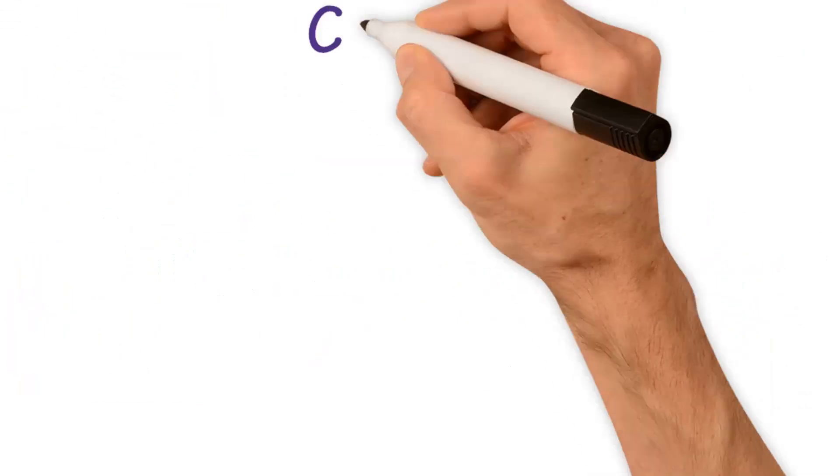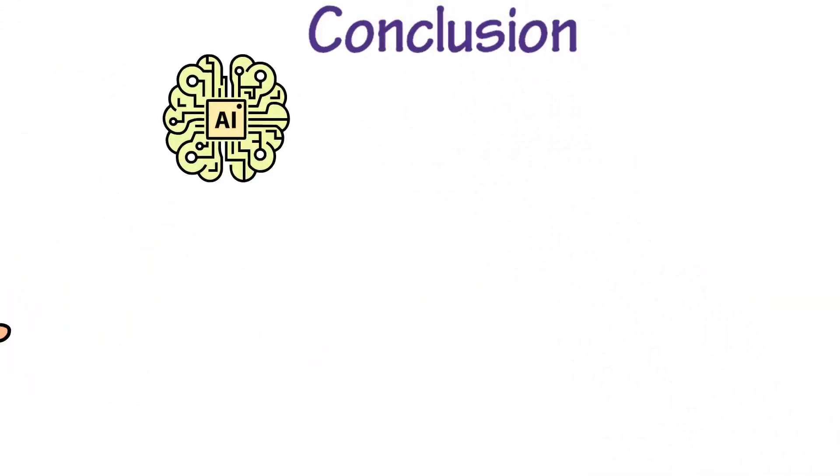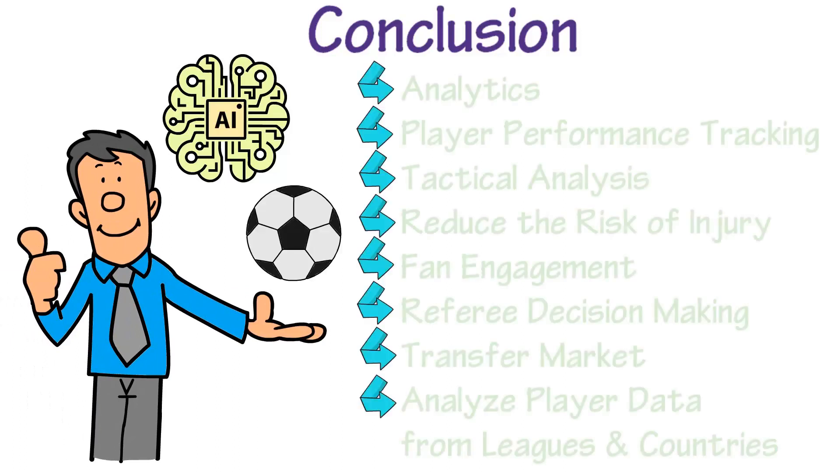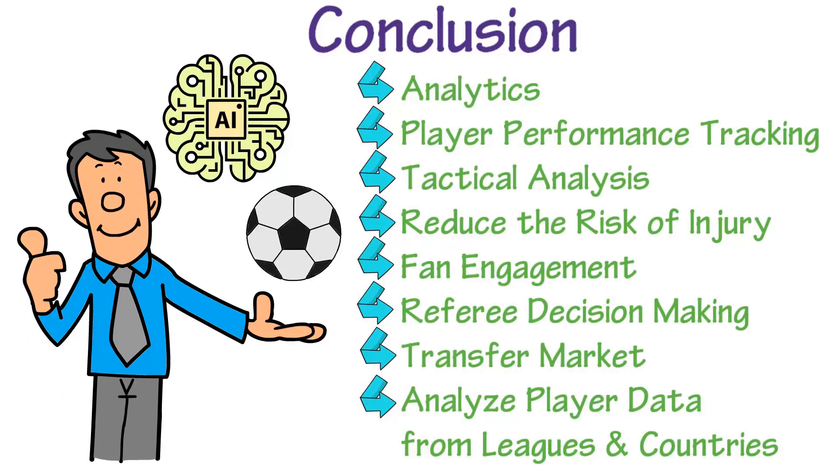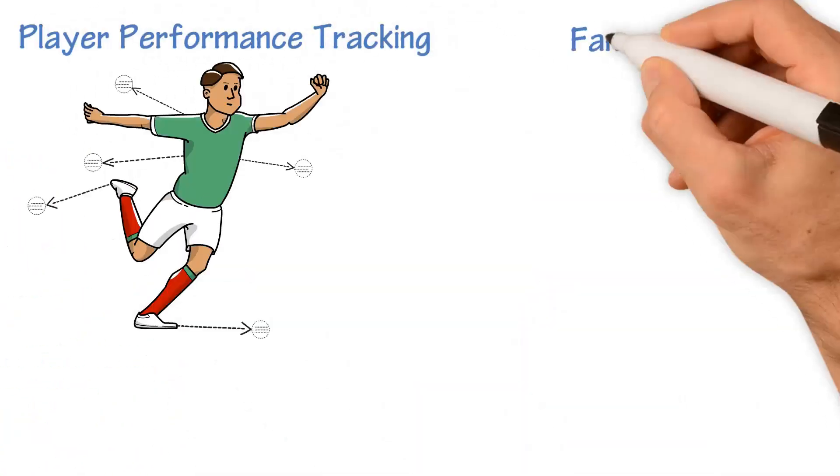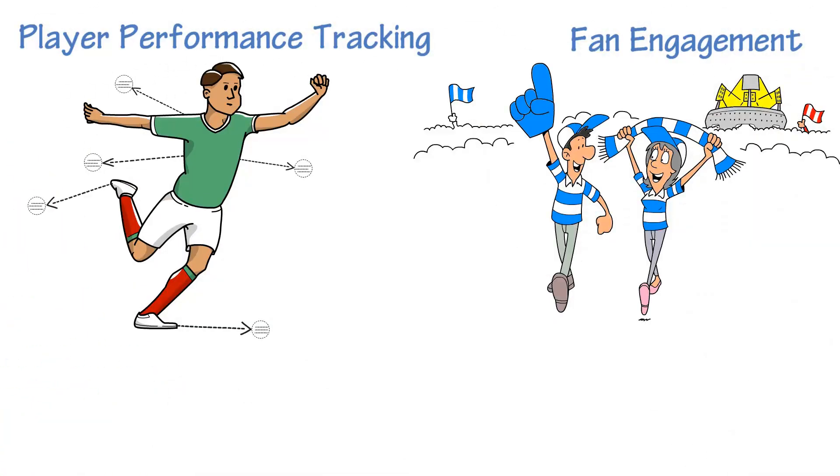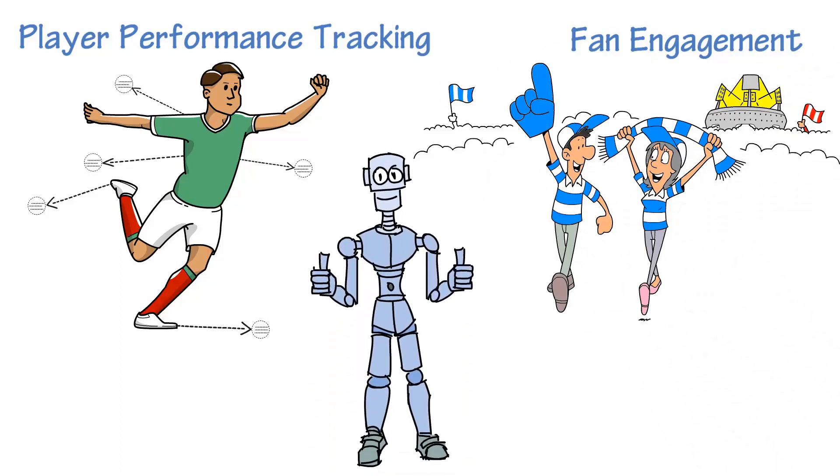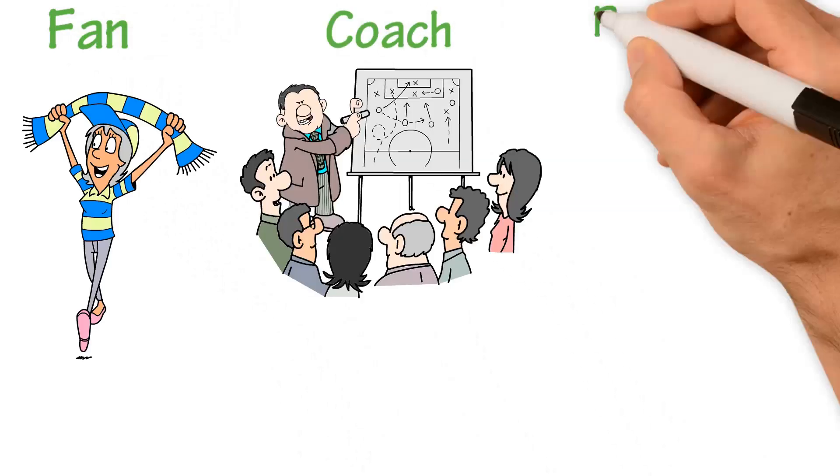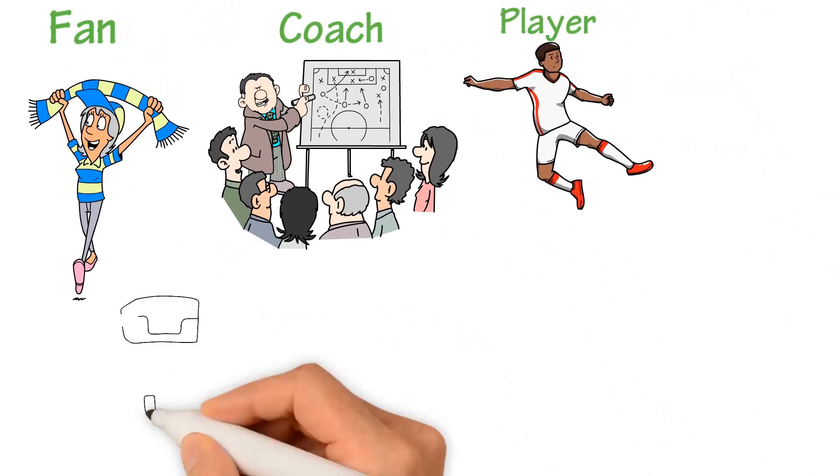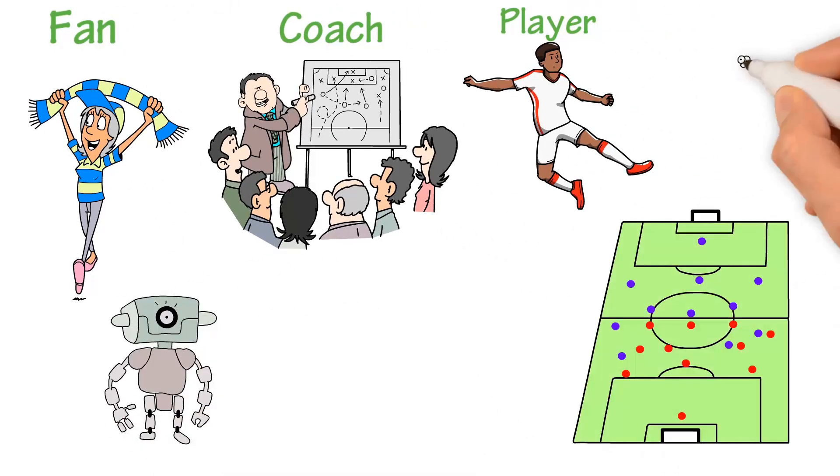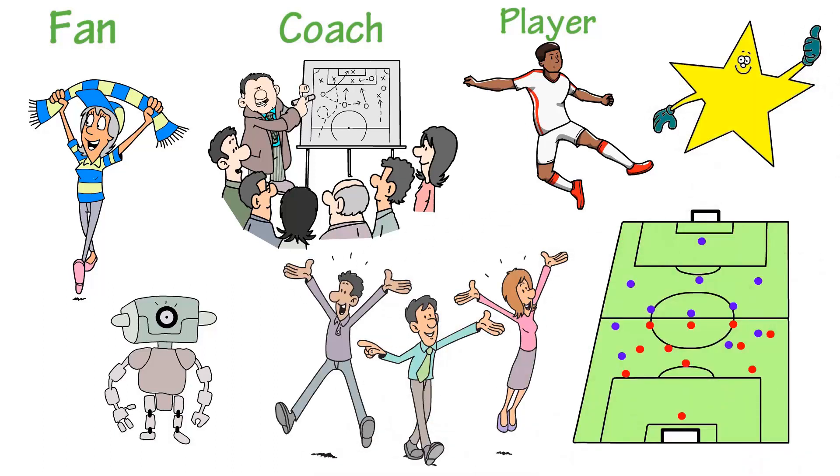In conclusion, AI is having a profound impact on soccer, delivering new and innovative solutions to some of the biggest challenges faced by teams and fans alike. From player performance tracking to fan engagement, AI is transforming the sport and delivering new and exciting experiences for all. Whether you're a fan, a coach, or a player, the application of AI technology is helping to make soccer a better, more engaging, and more exciting sport for everyone. Thank you for watching.